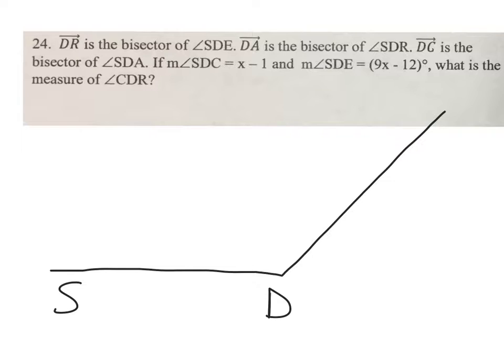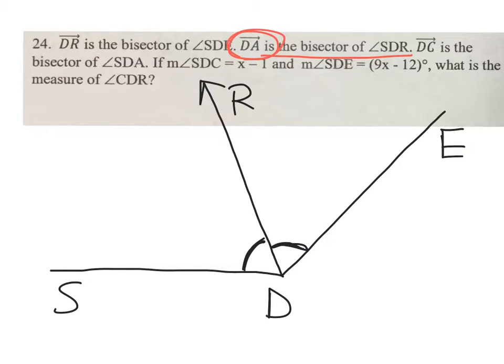We know that this half is congruent to that half. Next we read that ray DA bisects that angle that we just made, so here is SDR, and that bisects this angle, so we use two arcs here.